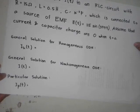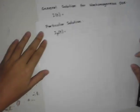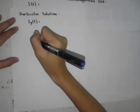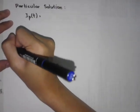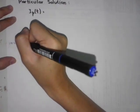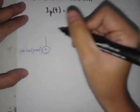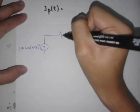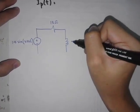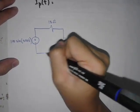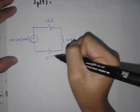First, we will draw the circuit. The EMF source is 115 sine 377T, connected to a resistor of 15 ohms, inductance of 0.5 Henry, and capacitor of 10 to the negative 2 Farad.